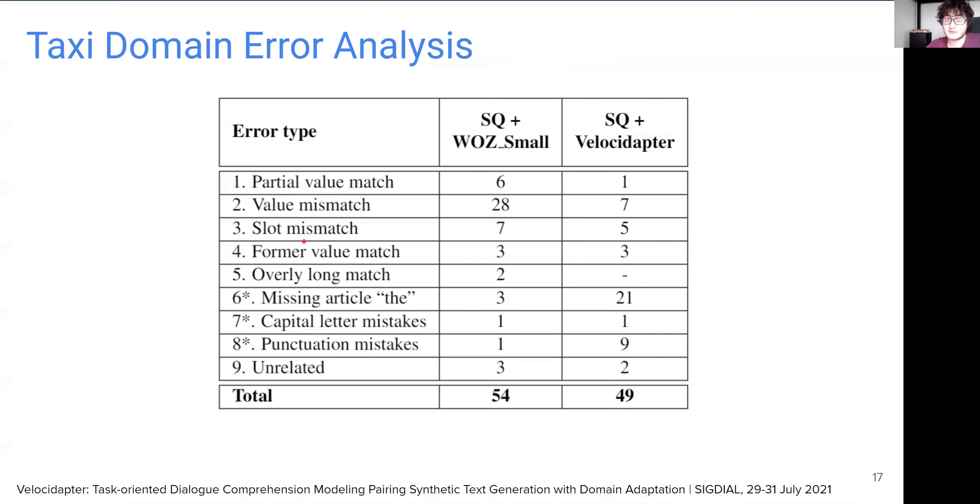Overlong match is when the model predicts a very long span that is few utterances long. We call errors six through eight as minor errors because the answers are actually correct but have small discrepancies from the ground truth such as missing the article 'the', capital letter mistakes or punctuation mistakes. Finally, we also have the unrelated answers by the system to the asked question. We see that VelocAdapter does significantly better in the combination of task-oriented dialogue-specific challenges. We believe the improvement in value mismatch is due to diverse value enrichment of templates.